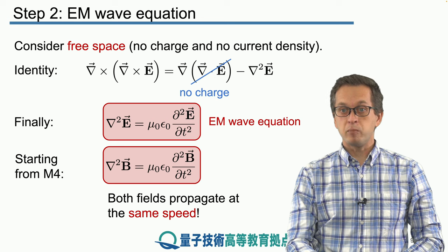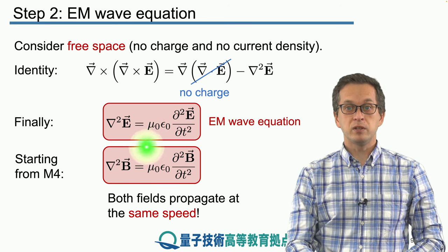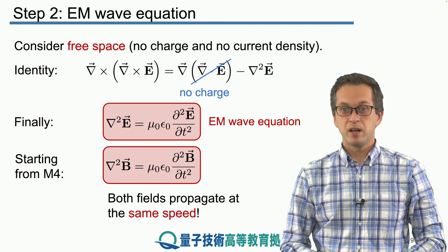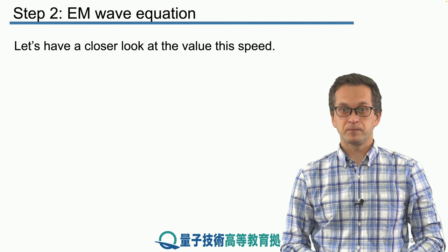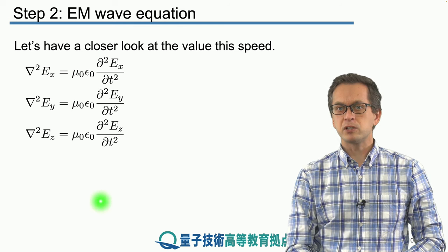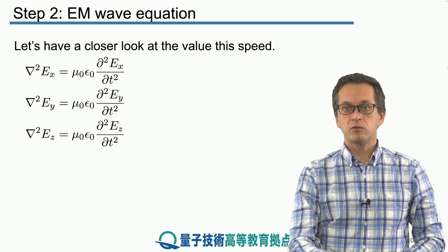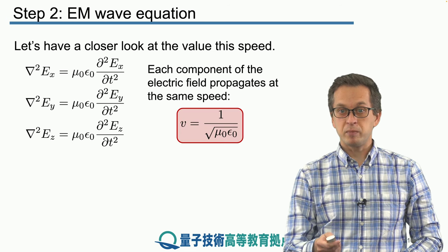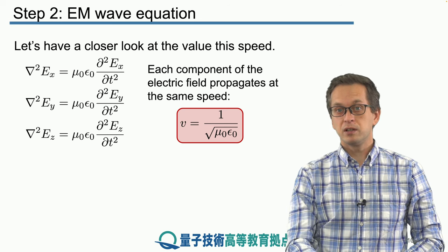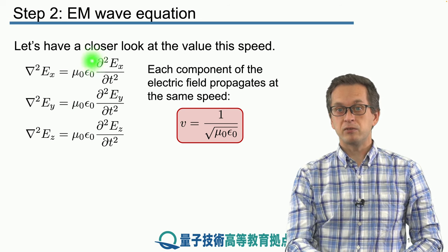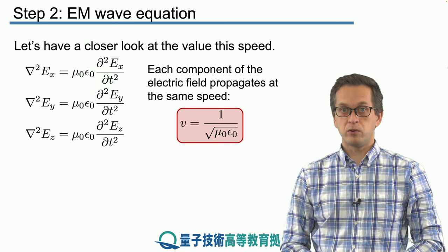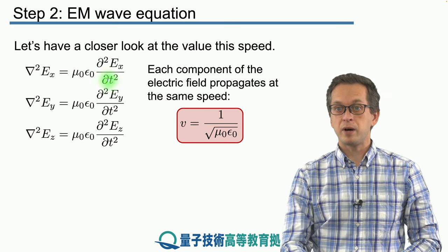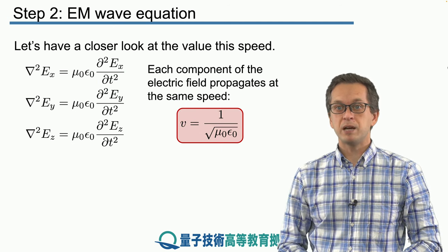What's also interesting is that both fields propagate at the same speed, which is related to mu naught times epsilon naught — the permeability of free space times the permittivity of free space. From the general form of the wave equation, the speed of propagation is given by one over the square root of mu naught times epsilon naught.